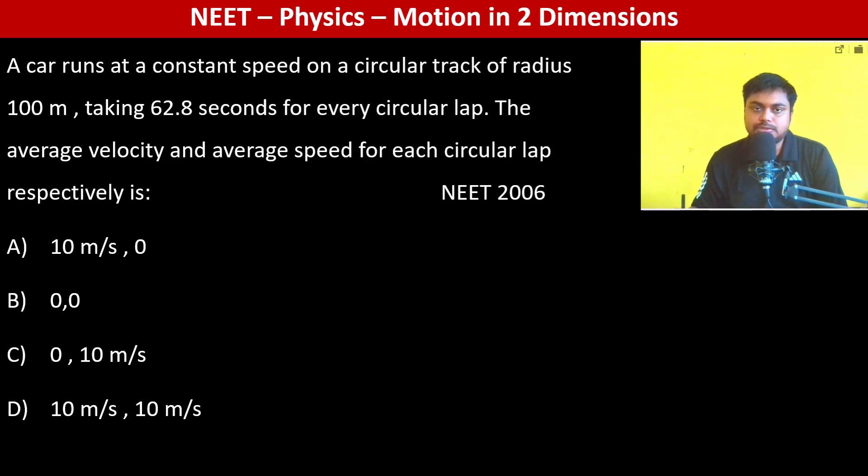A car runs at a constant speed on a circular track of radius 100 meters, taking 62.8 seconds for every circular lap. So this is the 100 meter circular track.